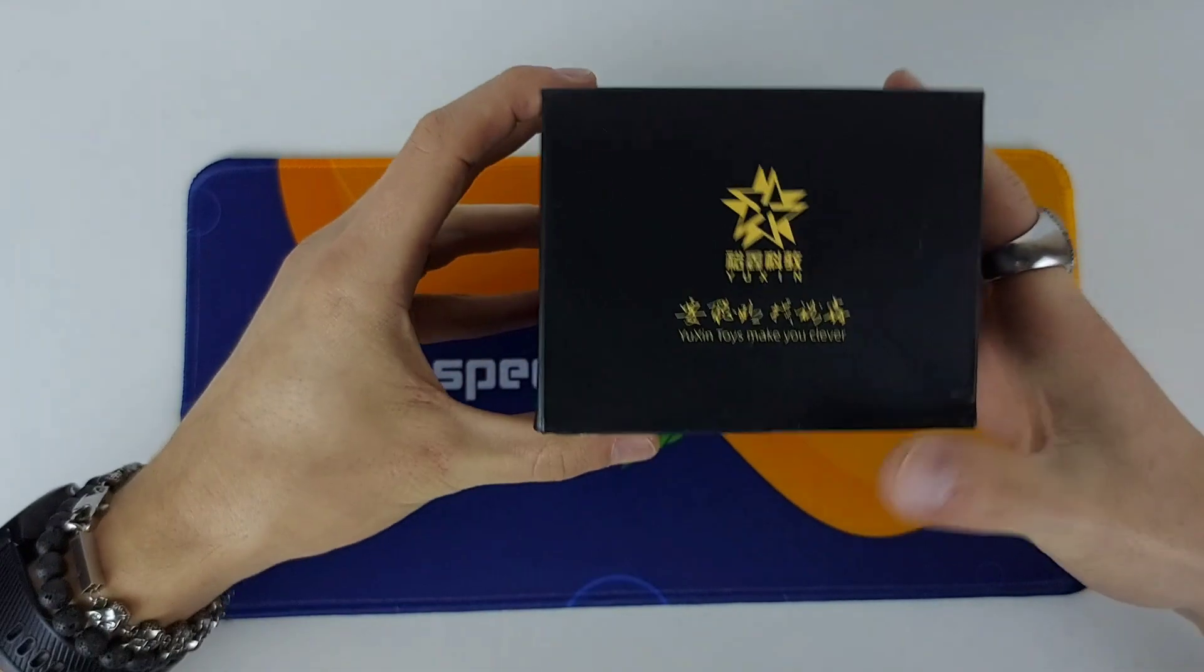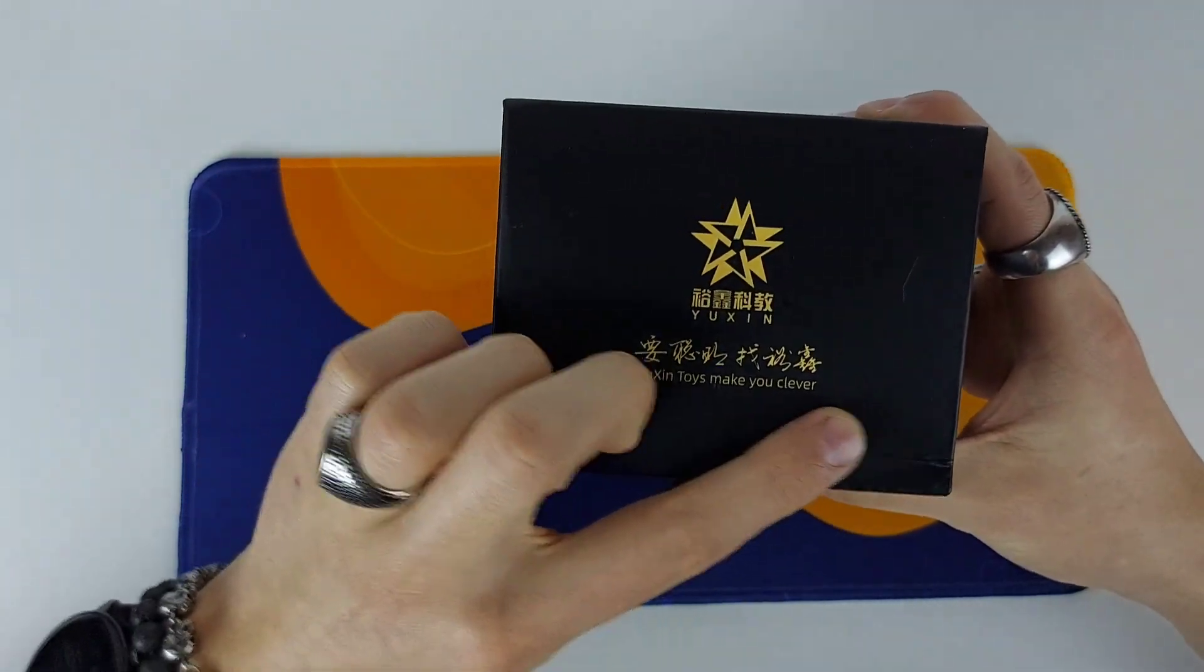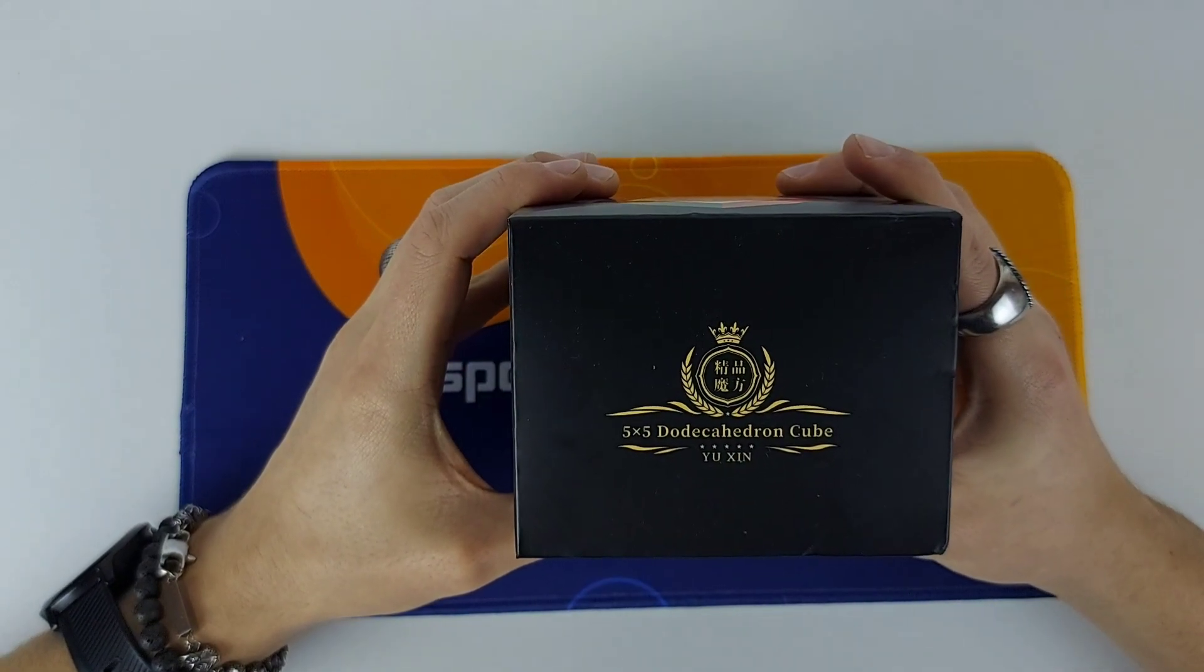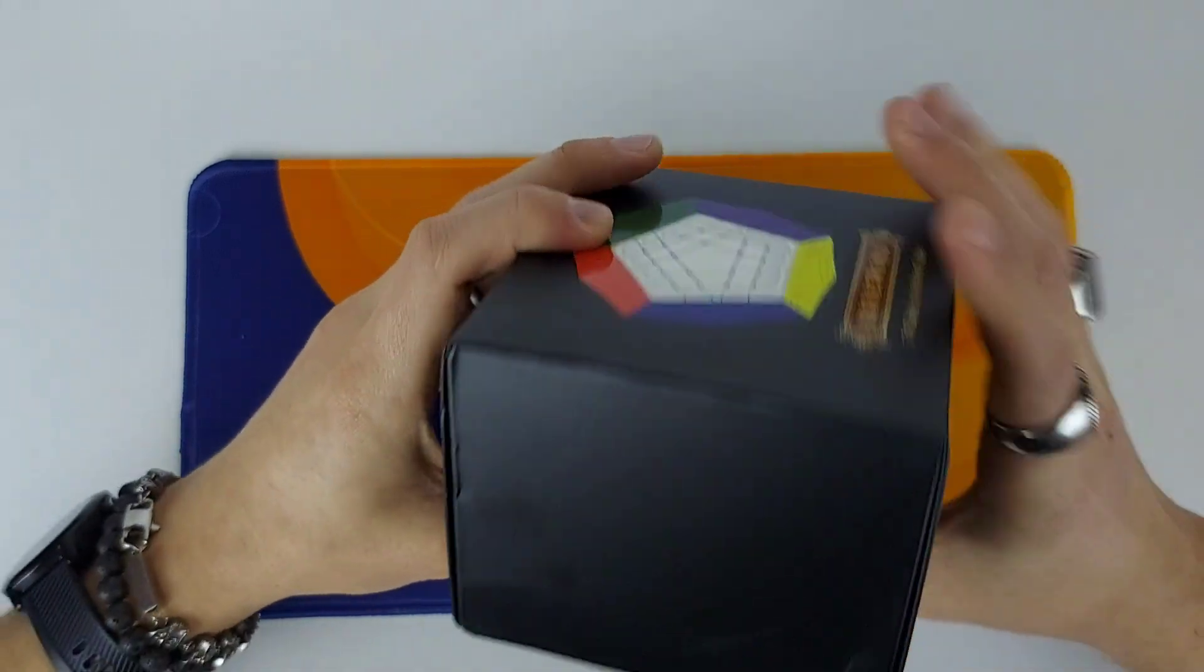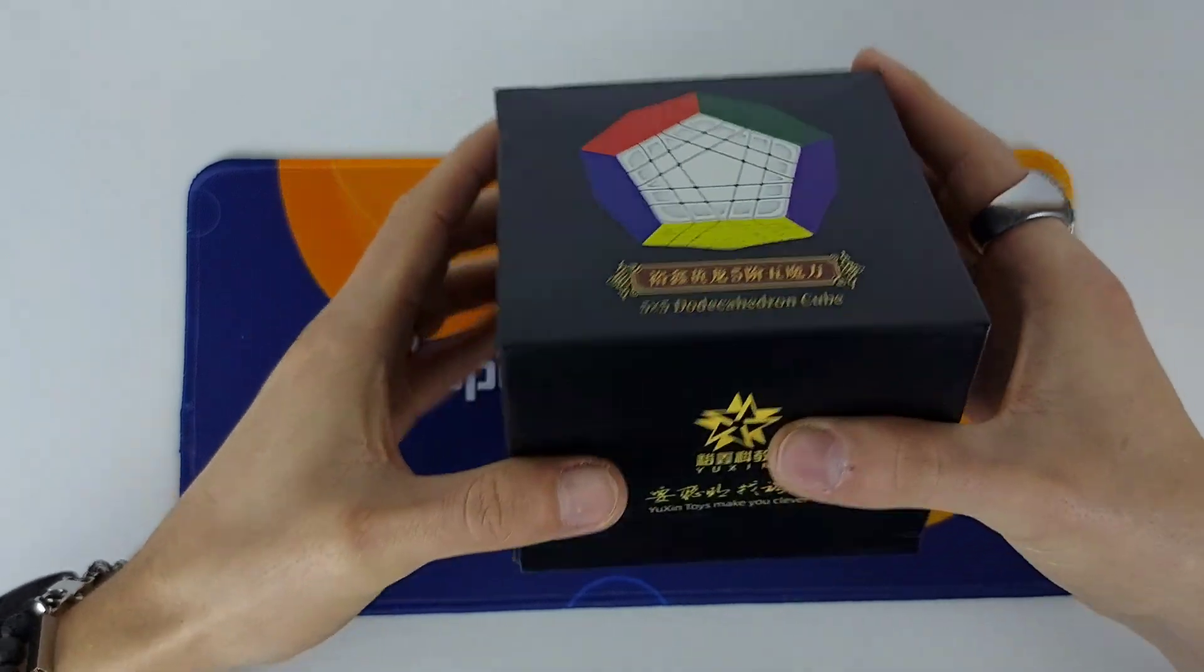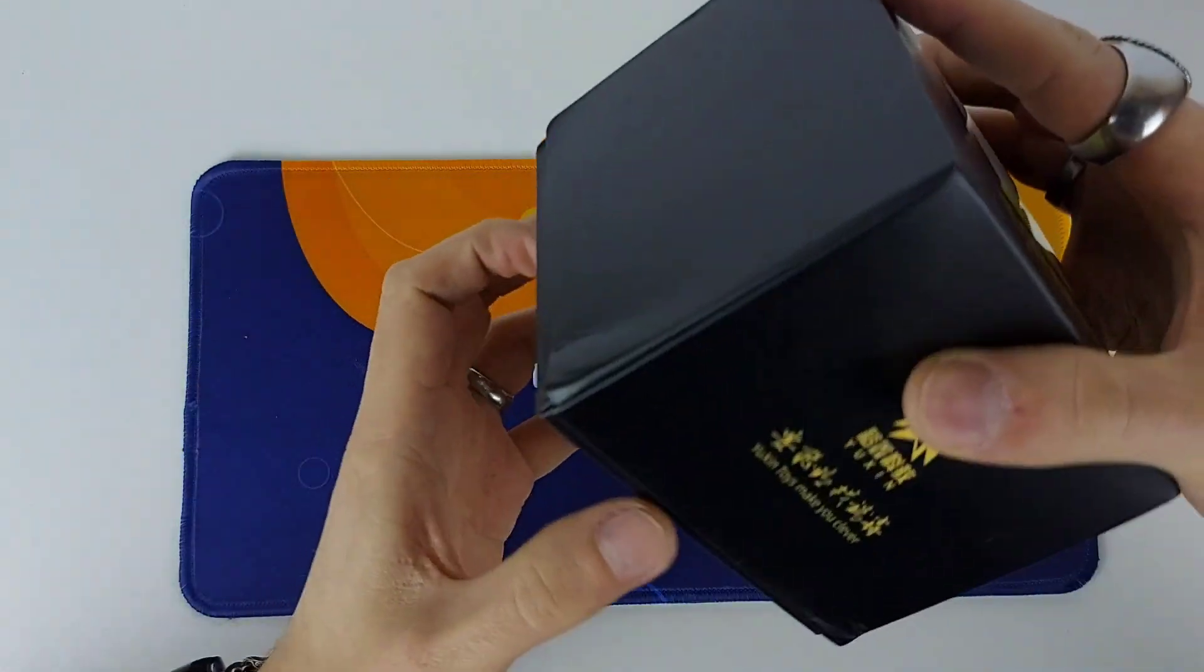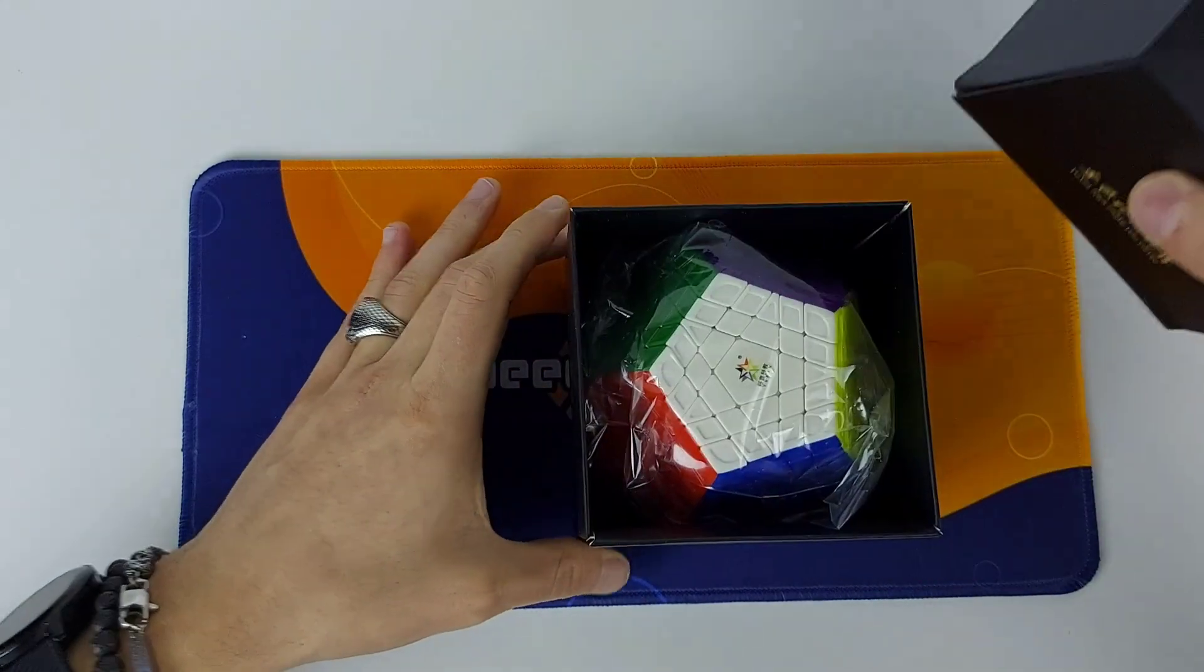Okay, so what's on the box? You have Yushin, Yushin toys make you clever. I guess that's right. 5x5 dodecahedron cube Yushin. Here you have the cube in a glossy display. Let's get into the box, if it opens up. Yes.